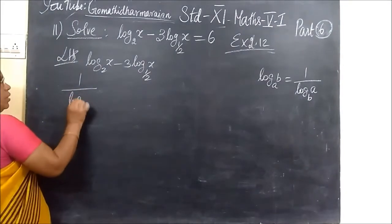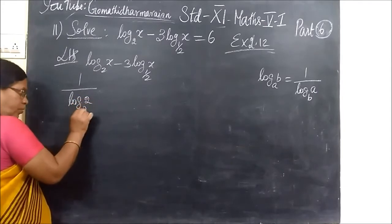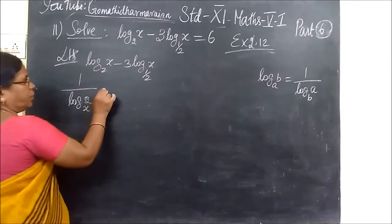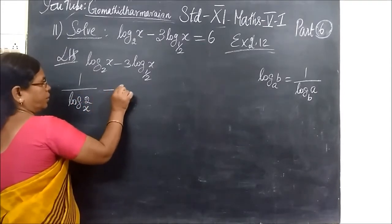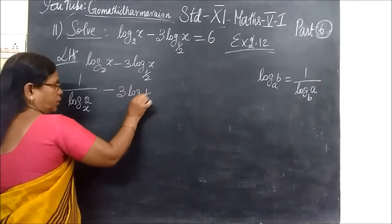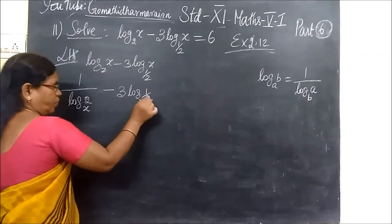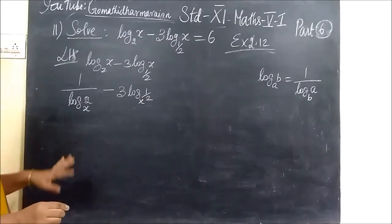Now, you write it as 1 by log in the 2, here, x, you can write. Then, minus 3 log. In the 1 by log x to the base is what? Yes. Change of base root.